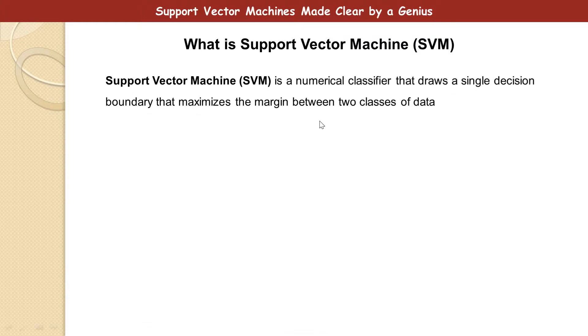This is the definition. A Support Vector Machine is a numerical classifier that draws a single decision boundary that maximizes the margin between two classes of data. So anytime you hear of classifier, know that it's a machine learning model or machine learning algorithm.